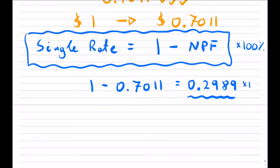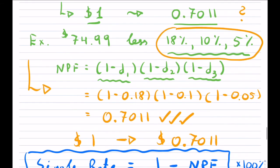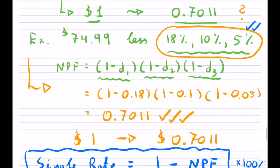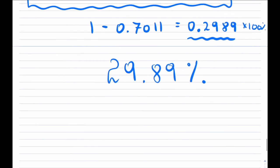So if you multiply this by 100%, that will give you 29.89%. And what this is saying is that instead of you telling me that I have this discount series of 18%, 10%, 5%, then all I have to say, really, is your list price less 29.89%.